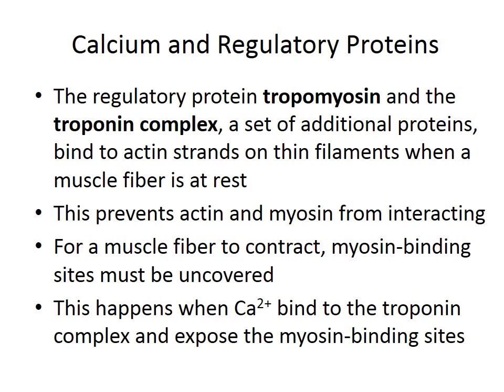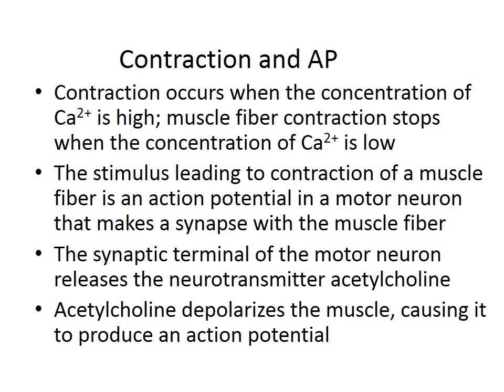Regulatory proteins control this cycle. Tropomyosin and the troponin complex bind to the actin strands on the thin filaments when a muscle fiber is at rest, preventing actin and myosin from interacting. For a muscle fiber to contract, the myosin binding sites must be uncovered — the tropomyosin and troponin complex must move away. This happens when calcium ions bind to the troponin complex, exposing the myosin binding sites. Contraction occurs when calcium ion concentration is high; it stops when calcium concentration is low.